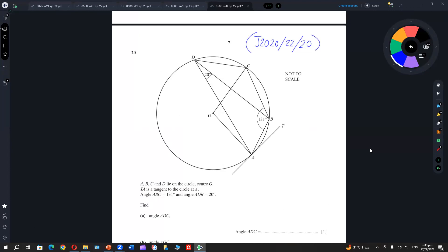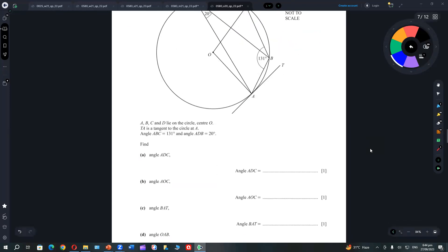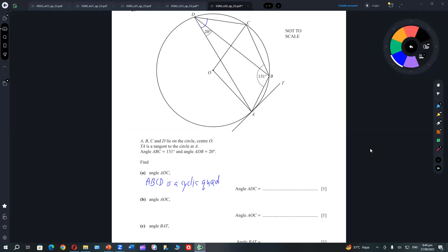Find angle ADC. We need to find this big angle. We have 131 here. It's a cyclic quadrilateral. And you can see A, B, C, D. Look at A, B, C, D quadrilateral. So the opposite angle sum to 180.